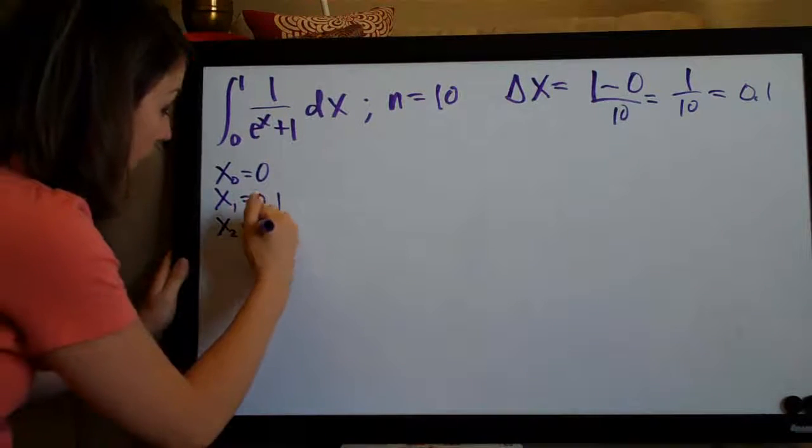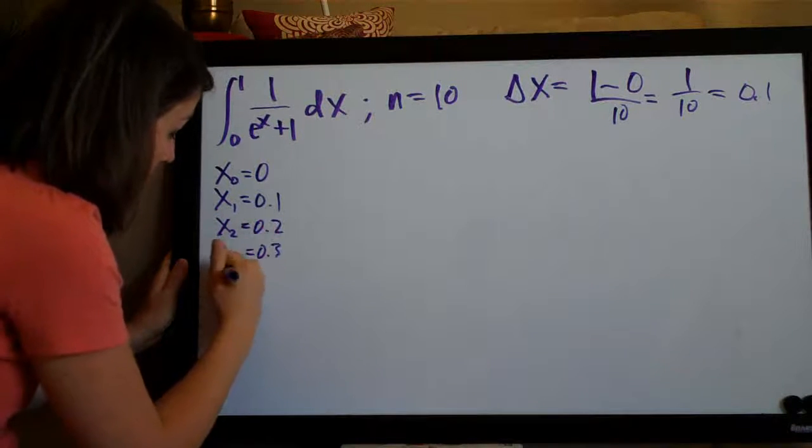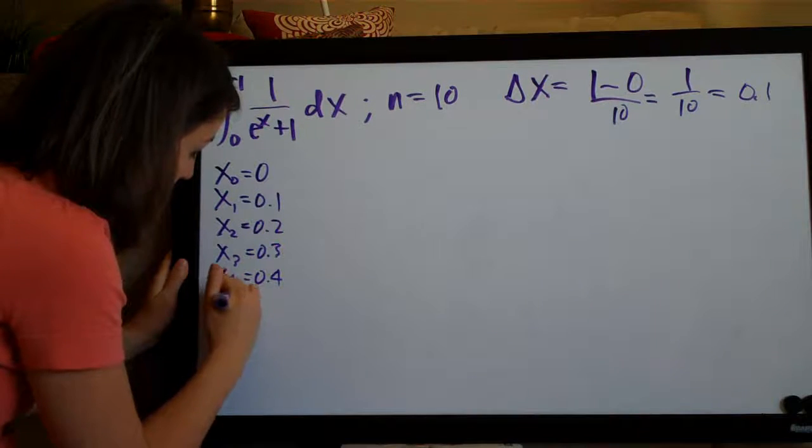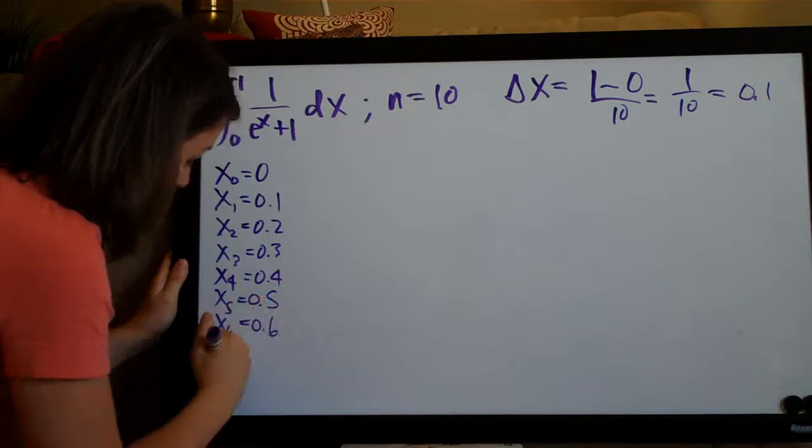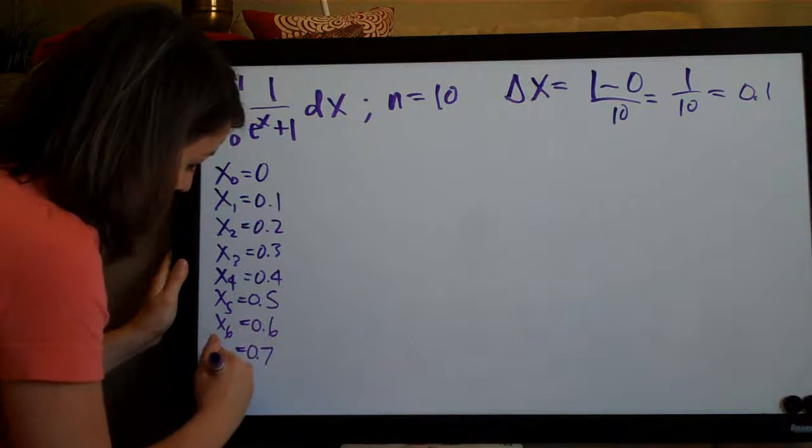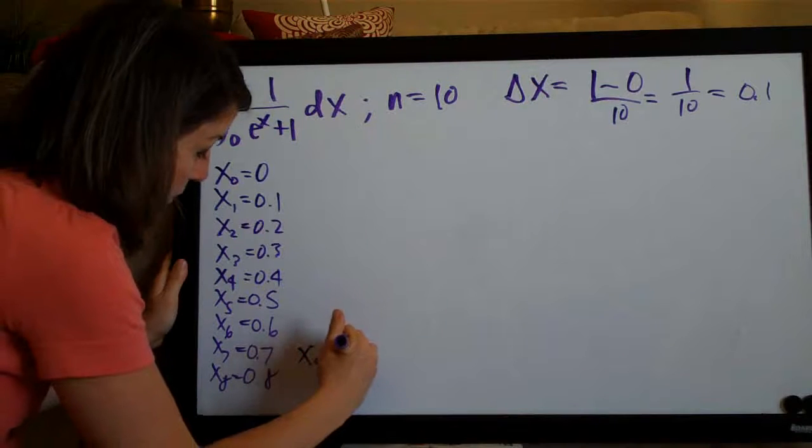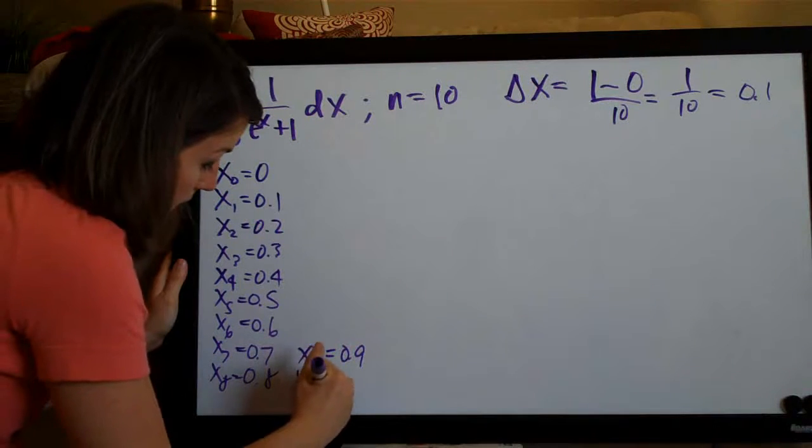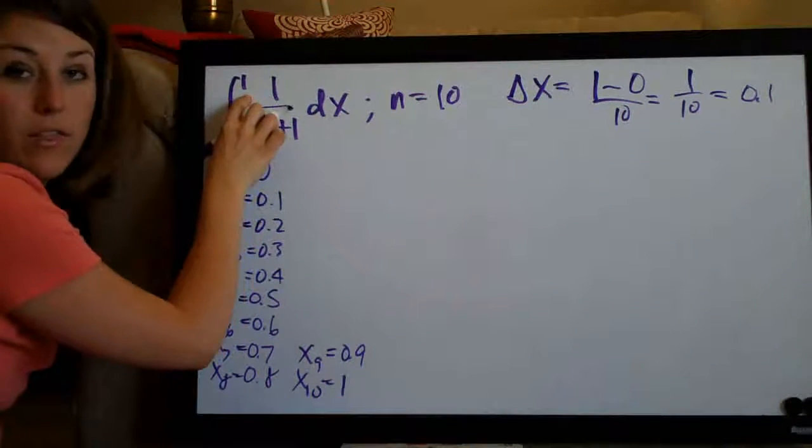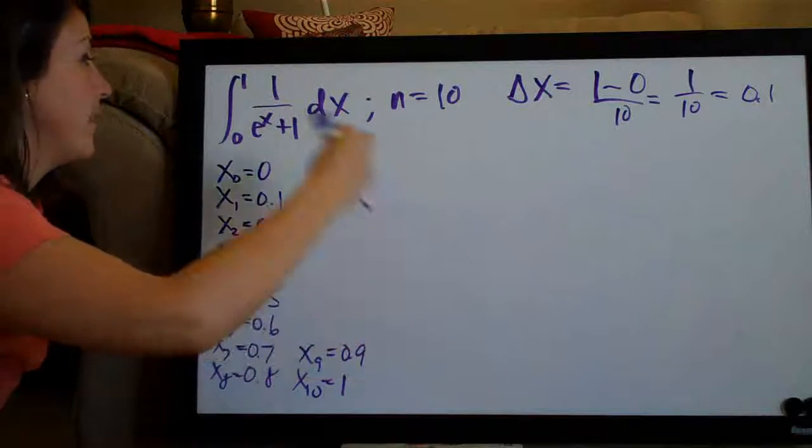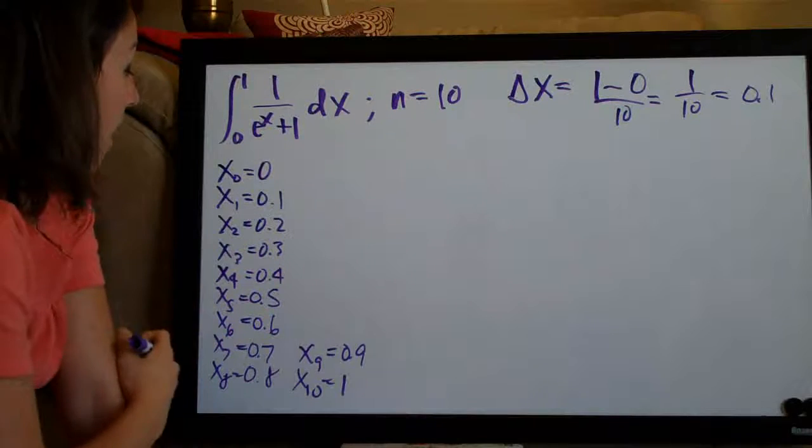And we just keep adding delta x until we get to the second number or the top number in the range. So we're going to add point one each time. x three is zero point three, x four equals zero point four, x five equals zero point five, x six equals zero point six, x seven equals zero point seven, x eight equals zero point eight, x nine equals zero point nine and x ten equals one. And now that I have reached the second number in the range, I can stop.